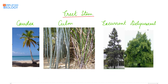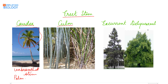Erect stem can be divided into different types. First is caudex — an unbranched stem with a crown of leaves at the top. This is seen in palm trees like pine, coconut, and Cycas. Next is culm, which has solid nodes and hollow internodes. Examples include bamboo and sugar cane.